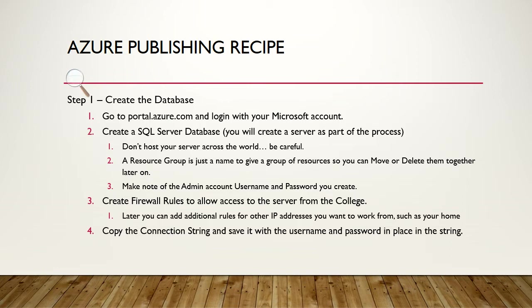Here at the college you want to be able to access it, and you can also add a rule for your home. One nice thing is that at least this campus seems to have one IP address to the outside world, so we just have to enter one rule and it doesn't matter what lab you're in — it'll let you access your database server. You can add additional rules for other locations, but don't go overboard — the more holes you punch in the firewall, the greater the risk.